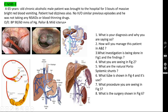The natural portosystemic shunts occur at five sites: the esophagus (esophageal varices), over the bare area of the liver, over the umbilicus (caput medusae), the retroperitoneal area, and through the superior hemorrhoidal vein (hemorrhoids). These are the five areas where natural portosystemic shunting takes place.